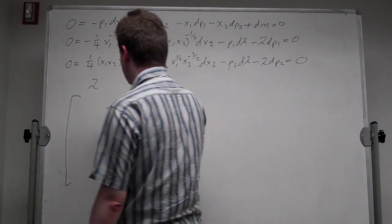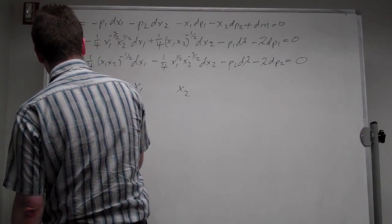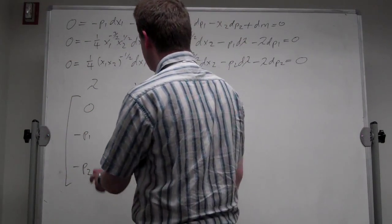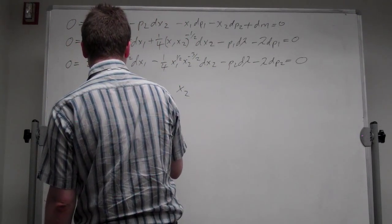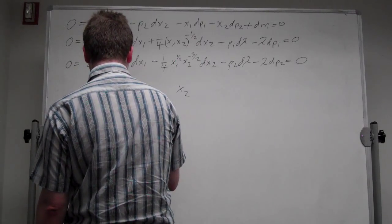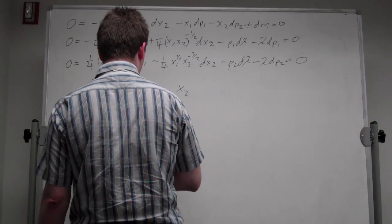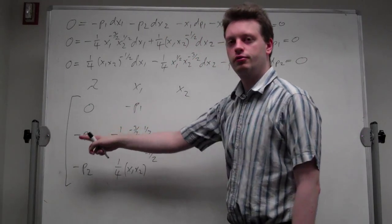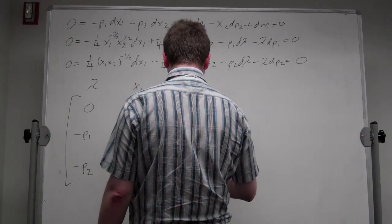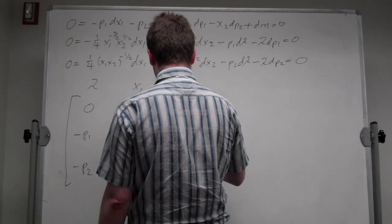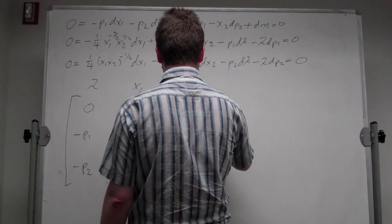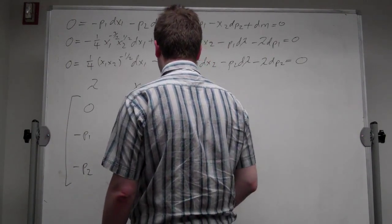The first equation is with respect to lambda, so we get 0 on top, then minus p1 and minus p2. In the second column, we get minus (1/4)*x1^(-3/2)*x2^(1/2) in the middle, and (1/4)*x1^(1/2)*x2^(-3/2) below, with minus p1 and minus p2 in the lambda column entries. And we have our matrix.